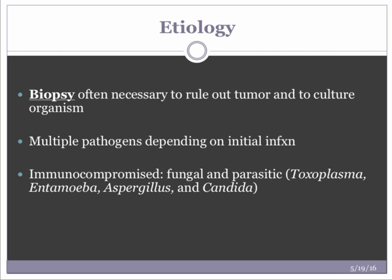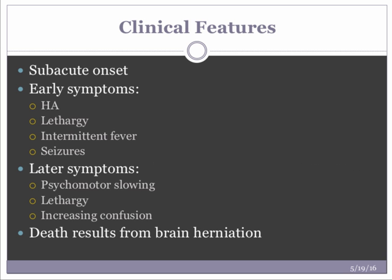Multiple pathogens can be responsible depending on the initial infection. Immunocompromised patients tend to get fungal and parasitic abscesses. Clinical features are typically subacute in onset. Early symptoms include generalized headache, lethargy, and intermittent fever, as well as generalized or focal seizures. Focal signs may be present early depending on location of the lesion. As the mass expands, increased intracranial pressure becomes more pronounced, with psychomotor slowing, increasing confusion, and more prominent focal neurologic signs.